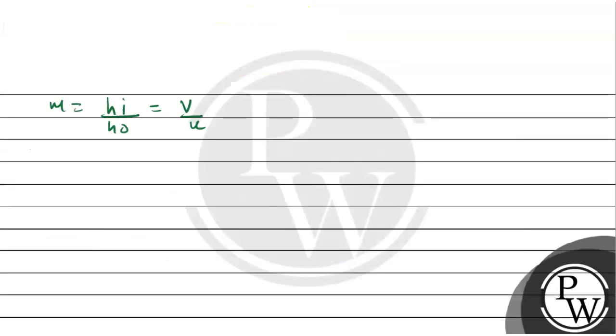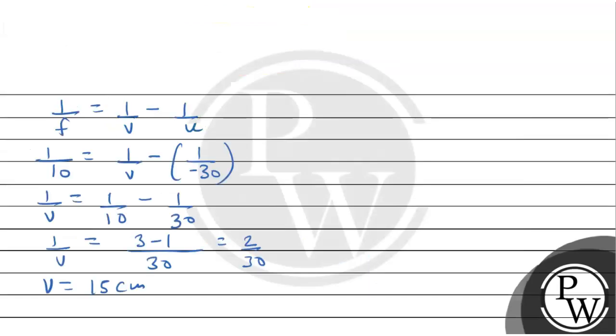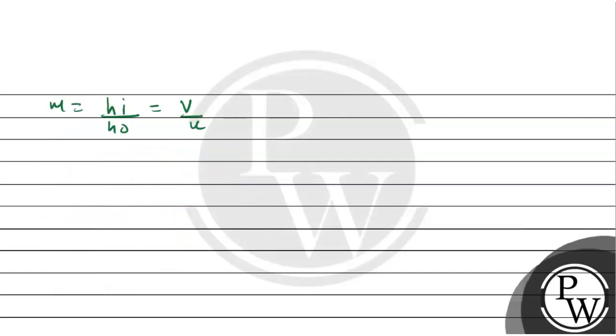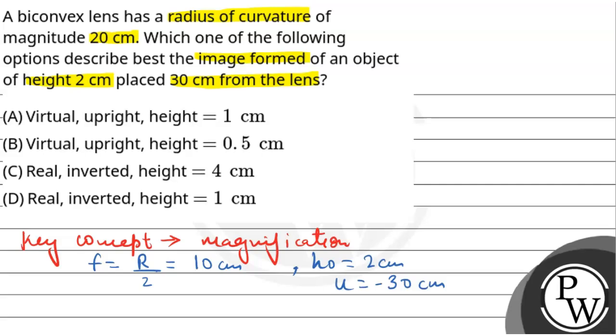The image distance is 15 cm, object distance is -30 cm, and the object height is 2 centimeters. Using the magnification formula with these values, the height of the image comes out to be minus 1 centimeter.